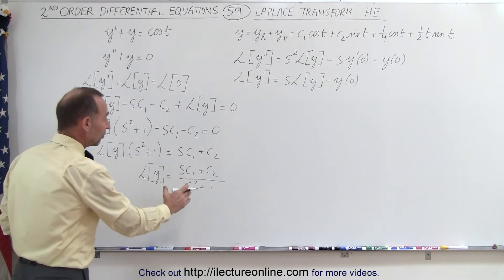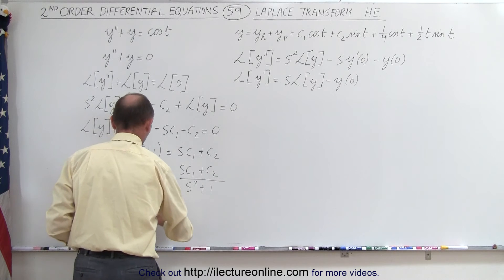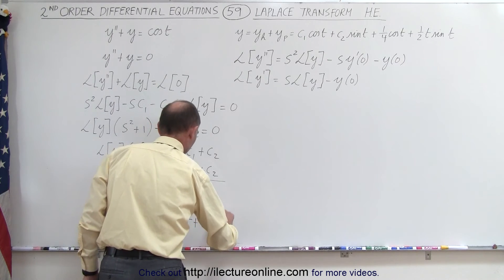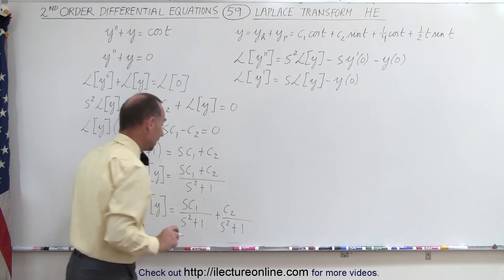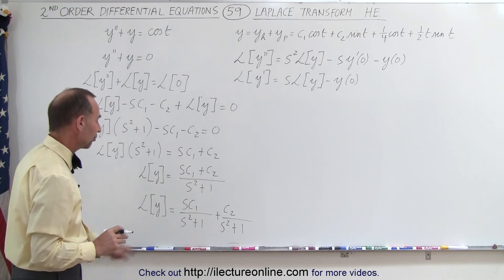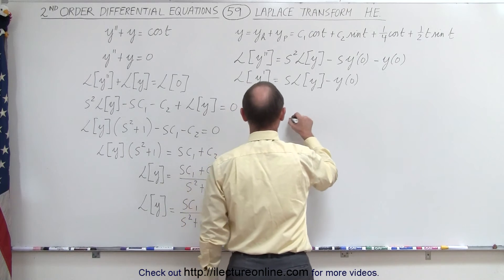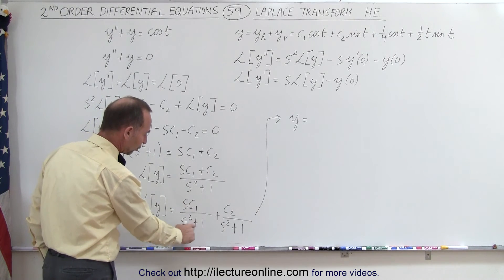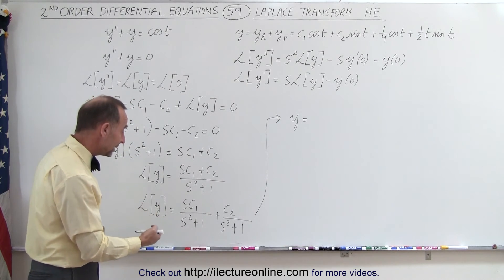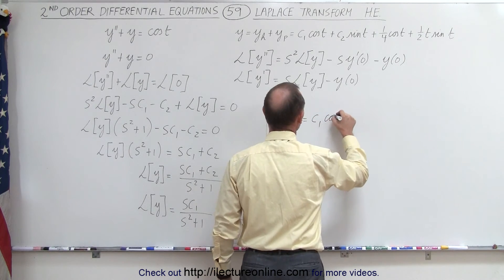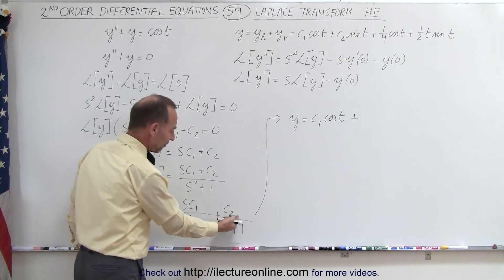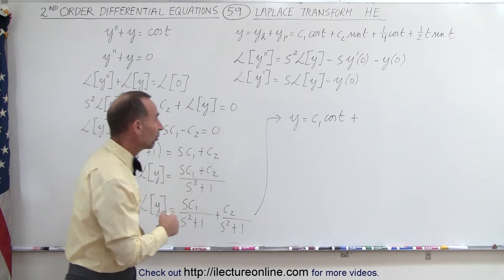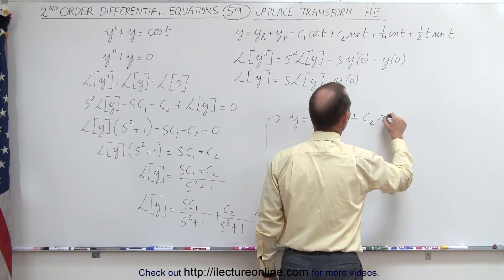We separate this into two fractions: the Laplace transform of y equals s·c1 over s squared plus one, plus c2 over s squared plus one. To find y, we take the inverse Laplace transform of each term. Factoring out c1 from the first term gives c1 times s over s squared plus one, which is the inverse Laplace transform of cosine of t. Factoring out c2 from the second term gives c2 times one over s squared plus one, which is the inverse Laplace transform of sine of t. So y equals c1 times cosine of t plus c2 times sine of t.